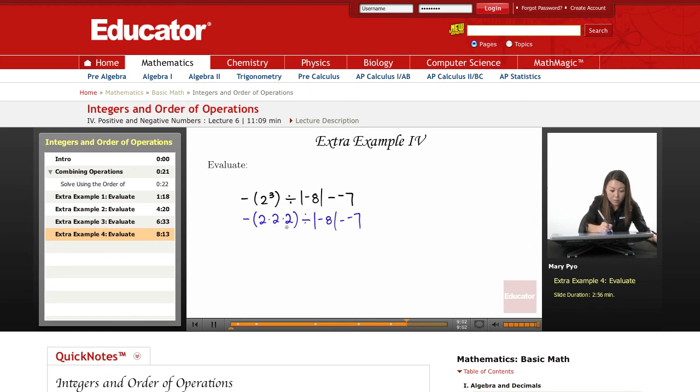So I'm going to make this an 8, negative 8, divided by absolute value of negative 8 minus a negative 7.